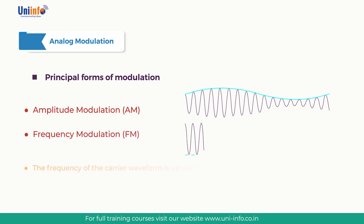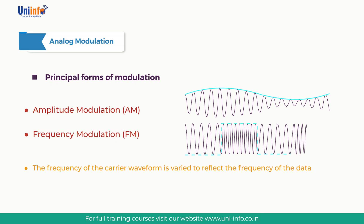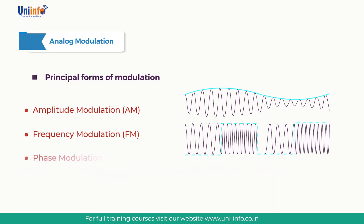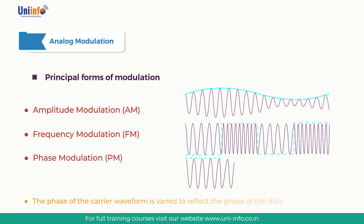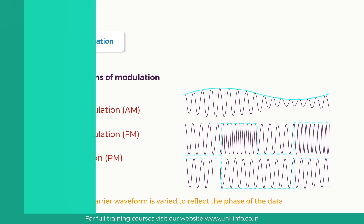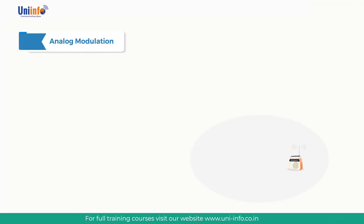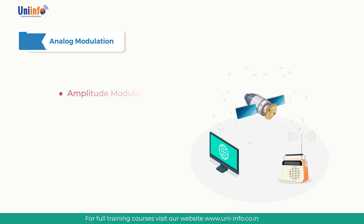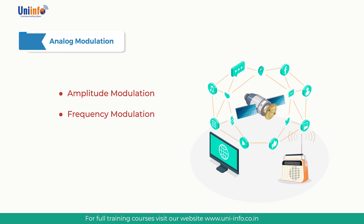Second is frequency modulation (FM), where the frequency of the carrier waveform is varied to reflect the frequency of the data. Third is phase modulation (PM), where the phase of the carrier waveform is varied to reflect changes in the phase of the data. Radio and television broadcast and satellite radio typically use AM or FM. Most two-way radios use FM, although some employ single sideband (SSB).